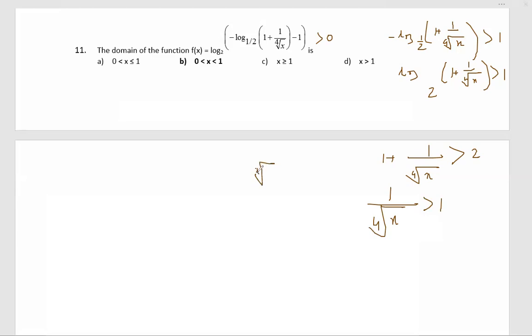fourth root of x is greater than one. It has to be greater than 0 because of this root. So x should lie between 0, which should be...